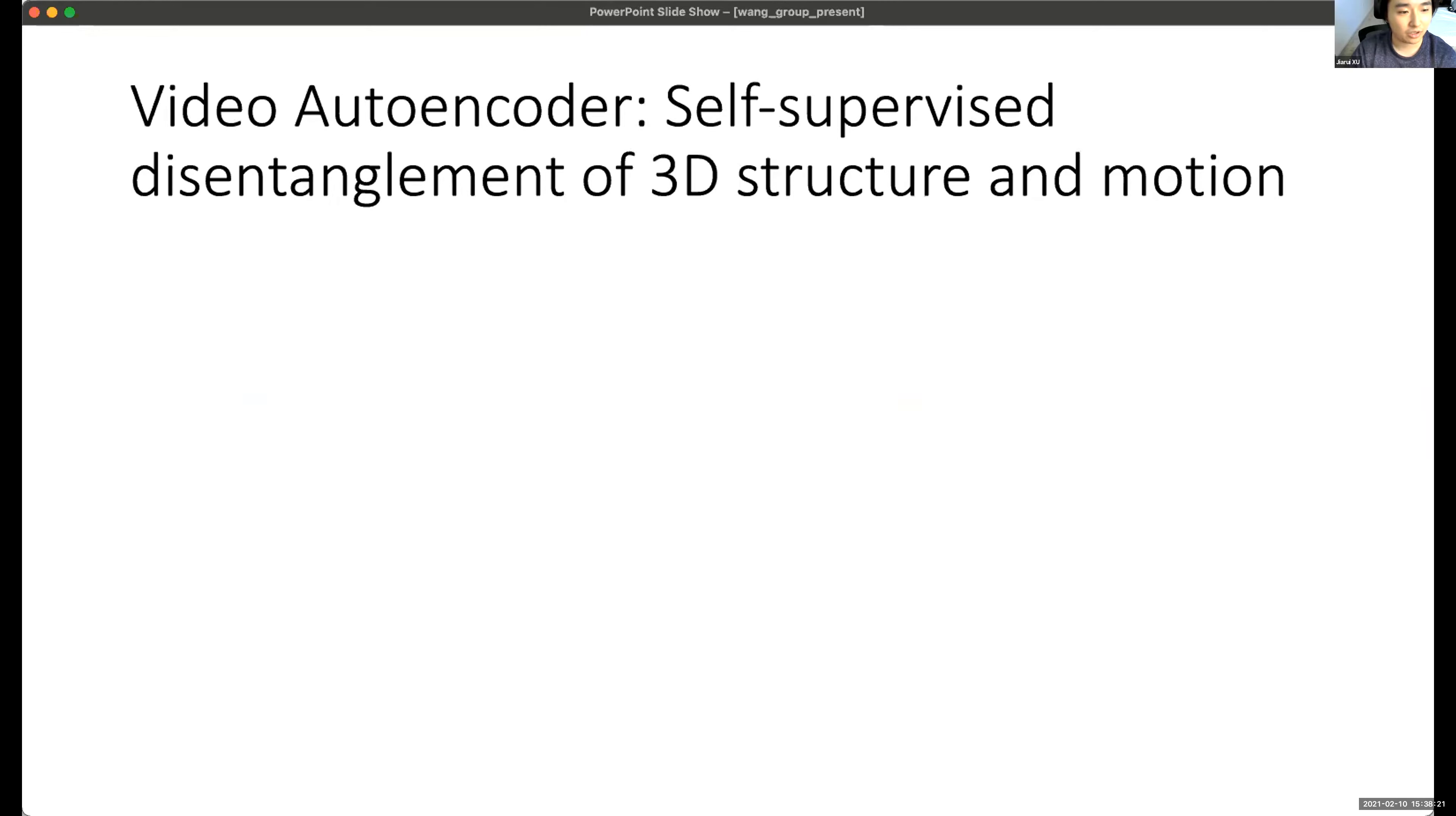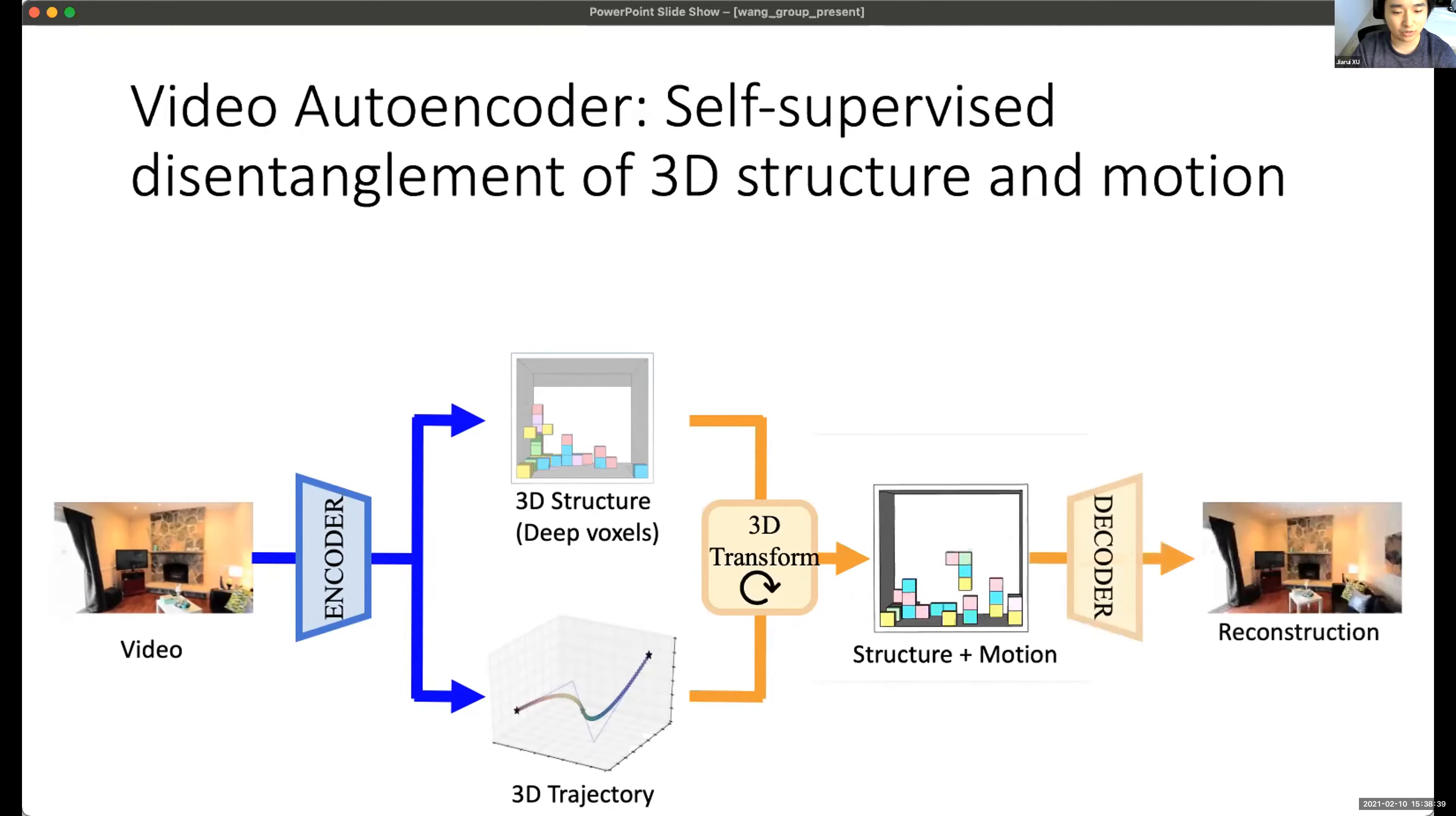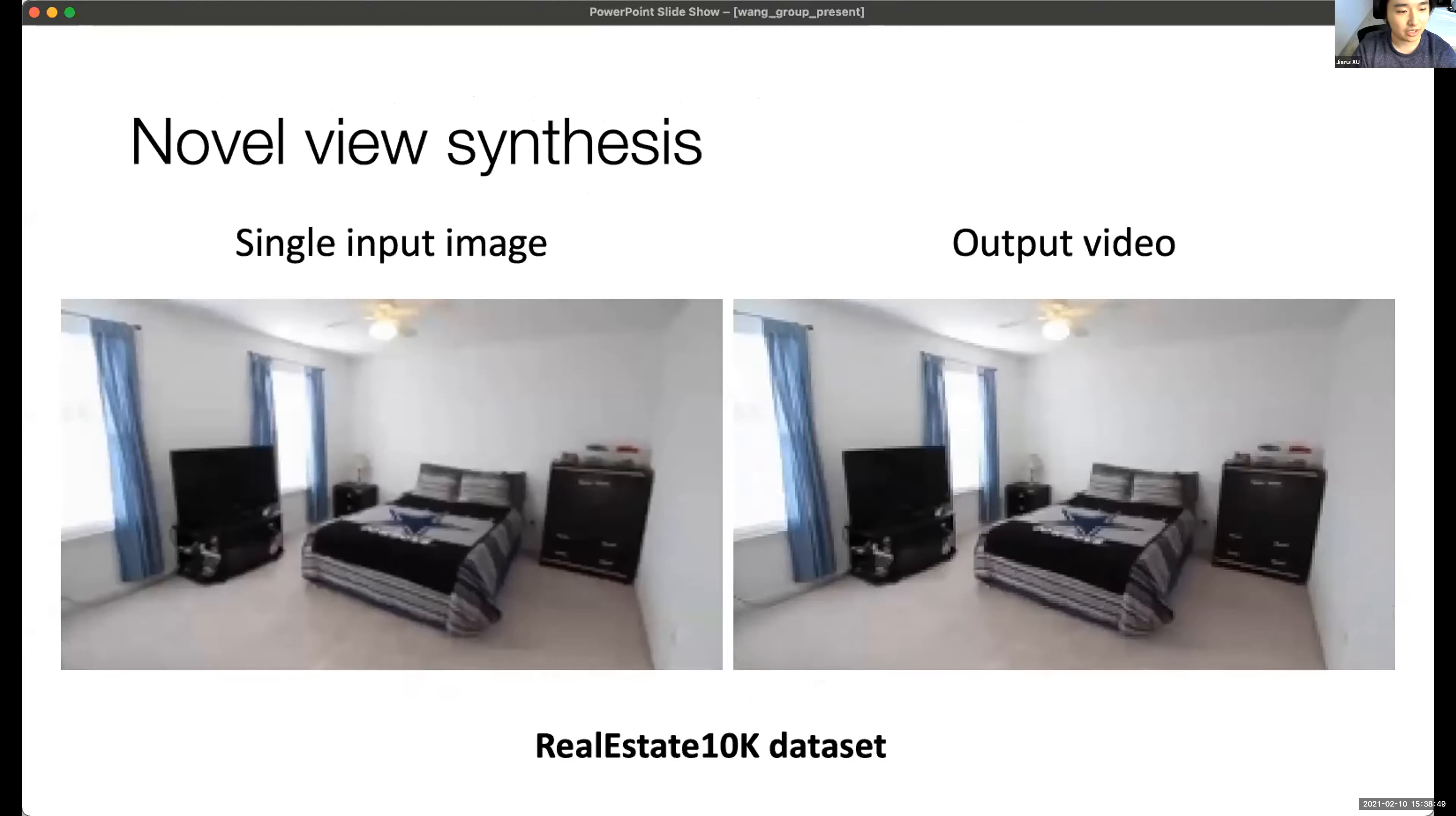And also, we have some autoencoder project. In this project, we input a video and we feed these into an autoencoder to generate a 3D structure and a 3D trajectory. By transforming the 3D structure, kind of a rotation or something like that, we can reconstruct a novel view and we can learn in a self-supervised manner.